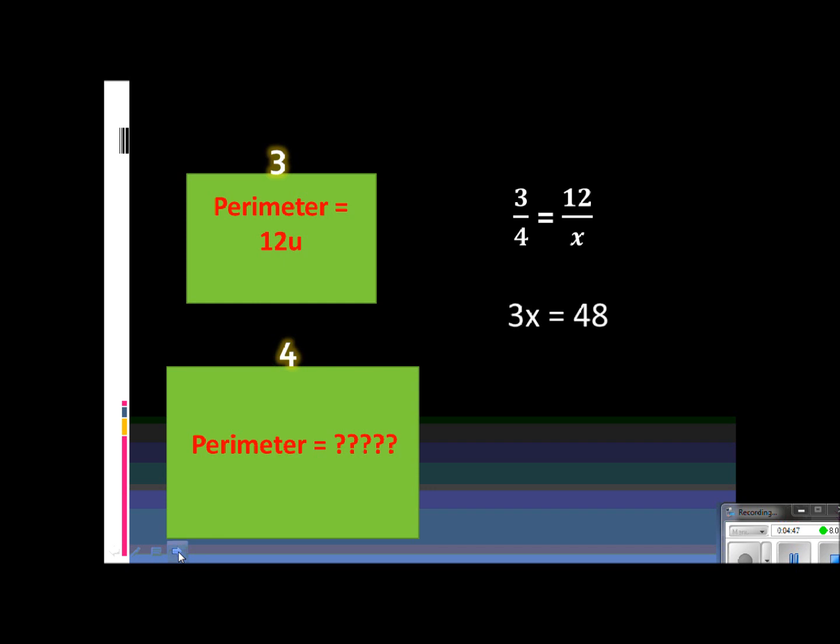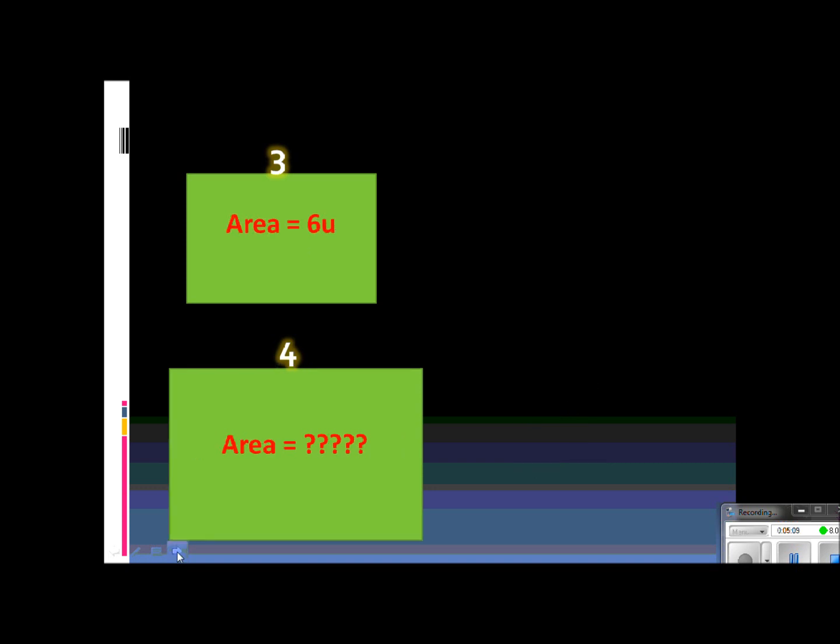So it would be 3x equals 48. And of course I need to get x by itself, so I would just divide both sides by 3. And then 48 divided by 3 is 16. So then I could conclude that the perimeter of the large rectangle is 16 units. And again, that one was pretty easy. This is where it gets tricky. And I need you to really focus because this is the most important part of this video.